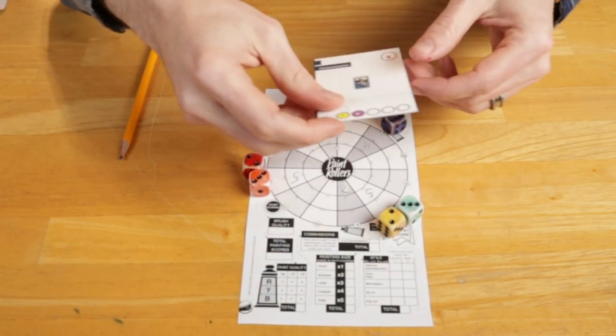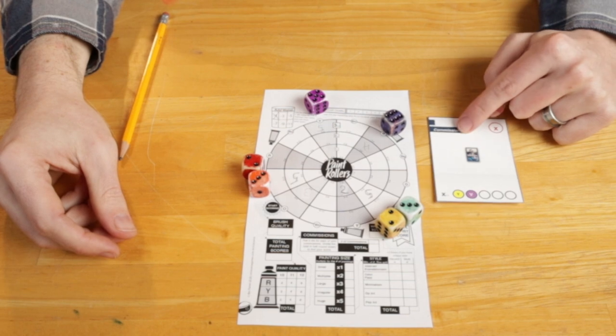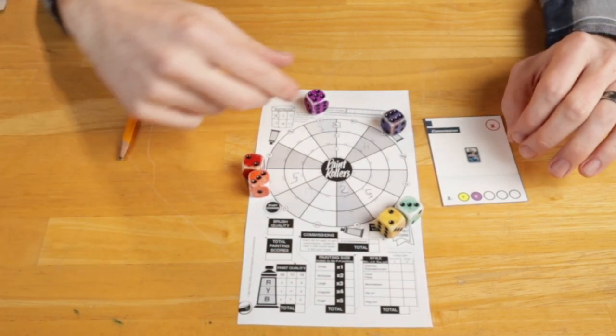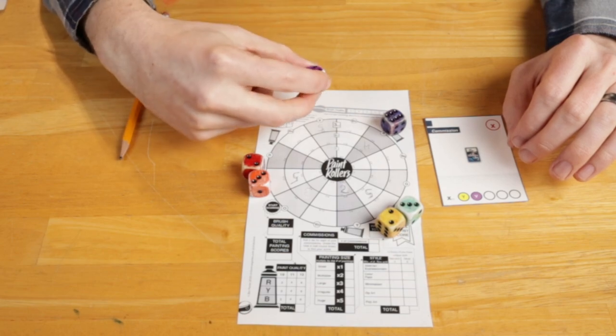And the other way that you can modify dice is if you've completed any commission cards. For every commission card that you've completed, you get to reroll one die on every turn.